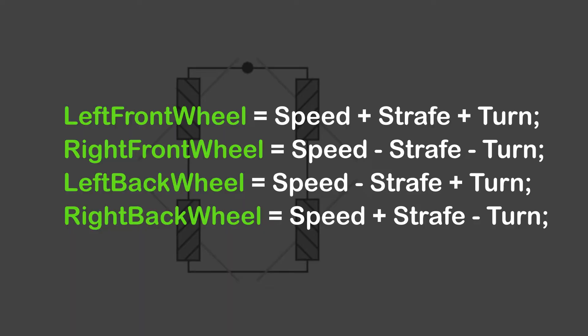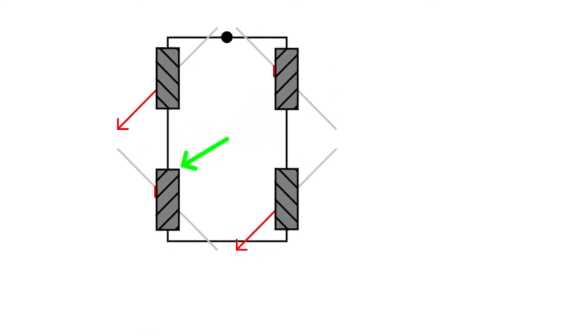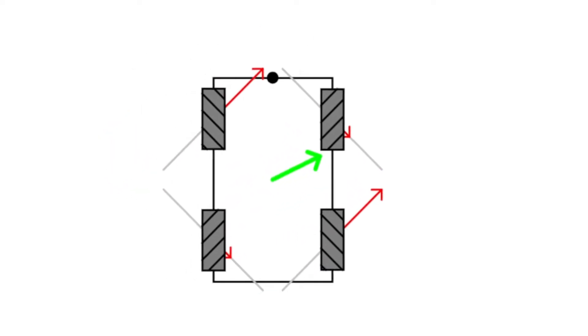We can use forces in all directions. At the end, we get these 4 equations. With these simple equations, we convert our input to wheel speeds. Then, our microcontroller uses these values to adjust the speed of motors.